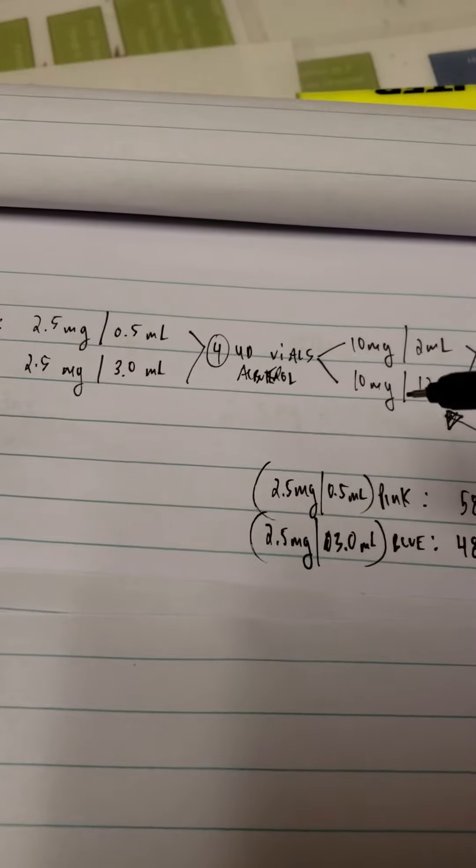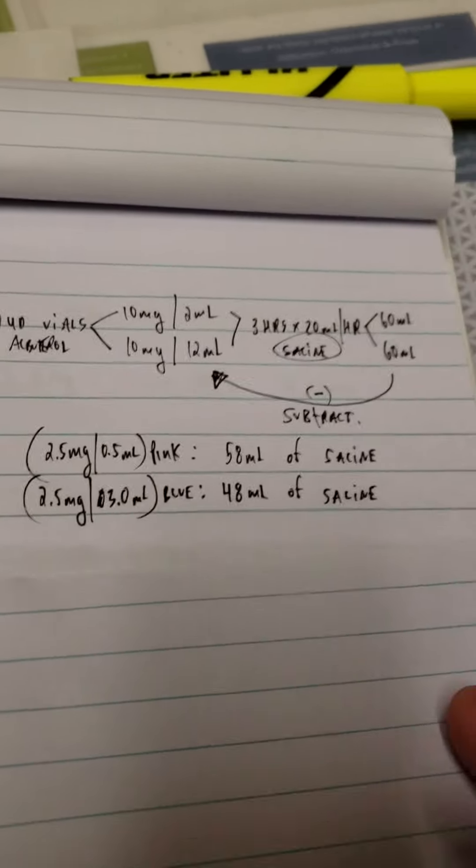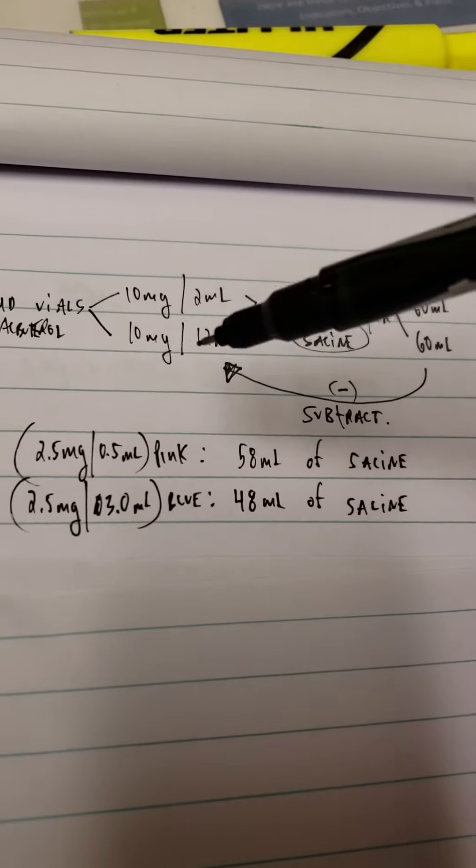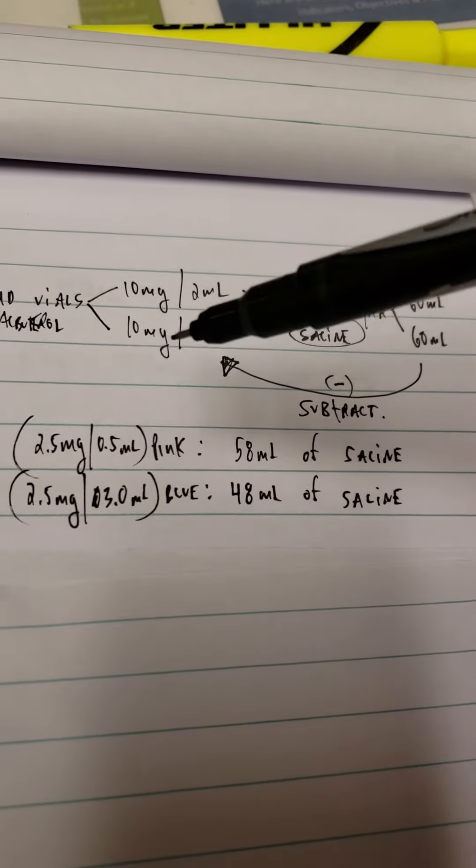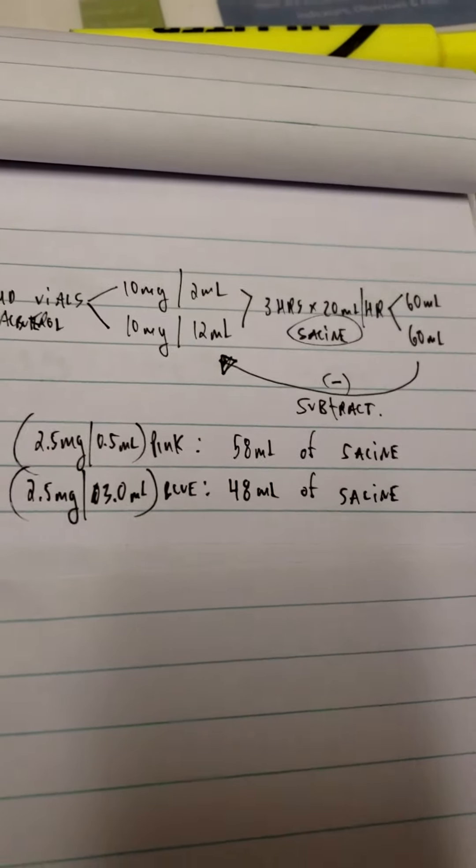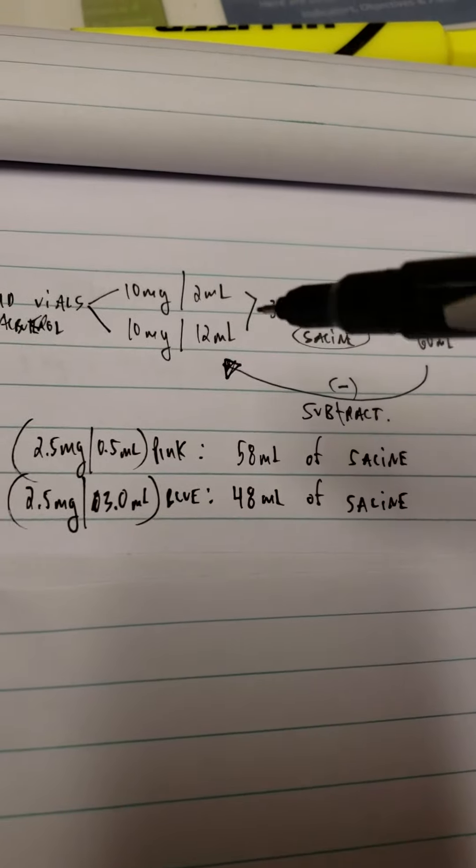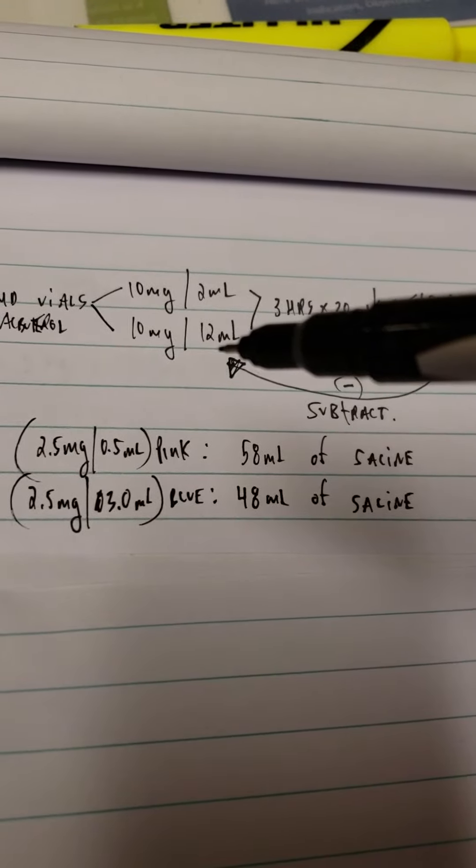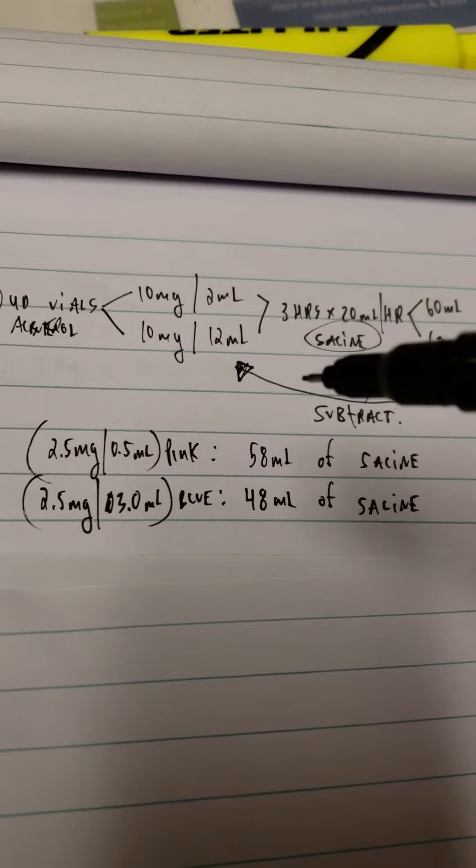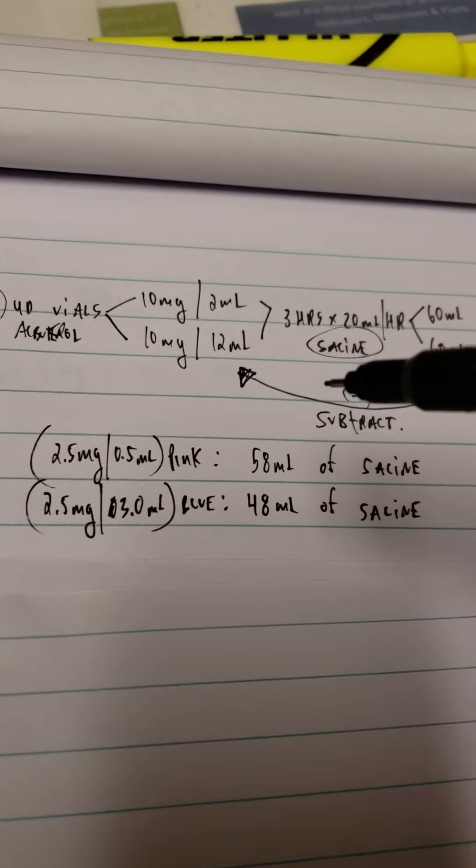3 times 4 is 12. So we establish that if we know we have all 10 milligrams of the albuterol, and in that solution there's 2 ml's or 12 ml's, the next part of the question is how much...